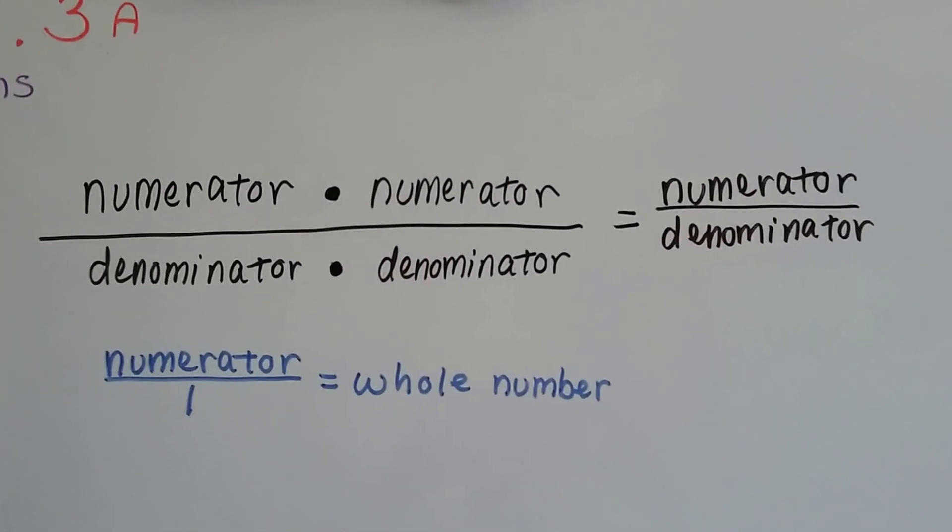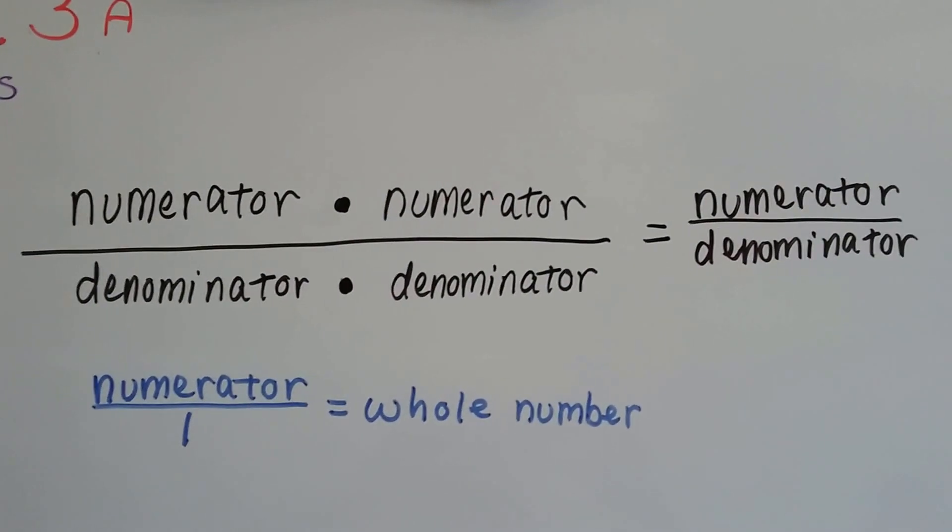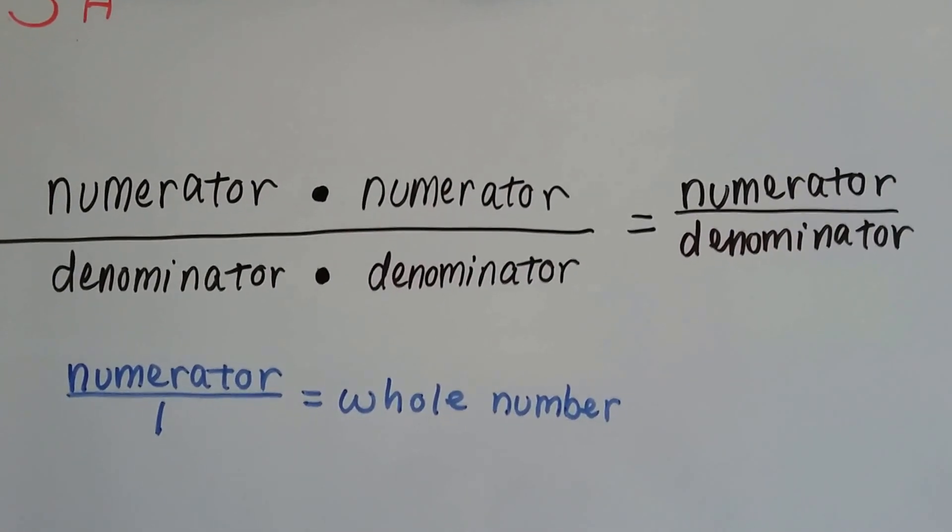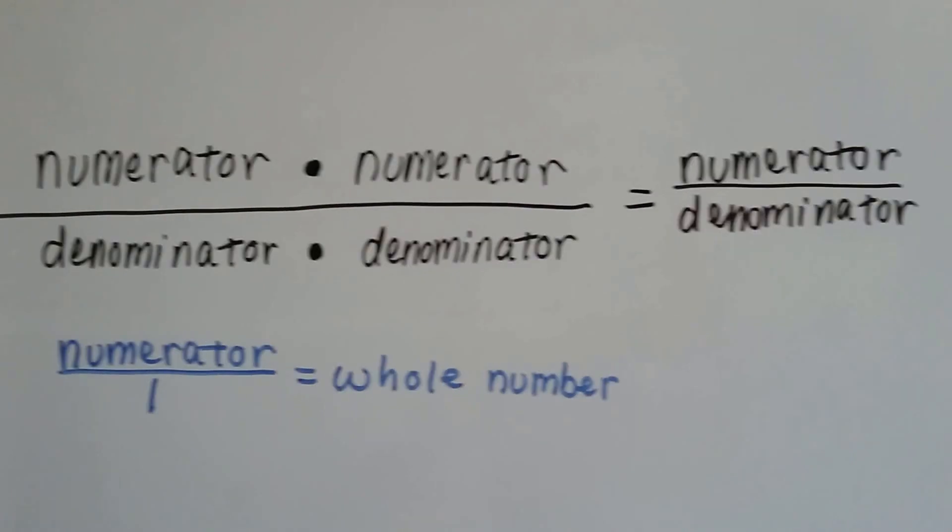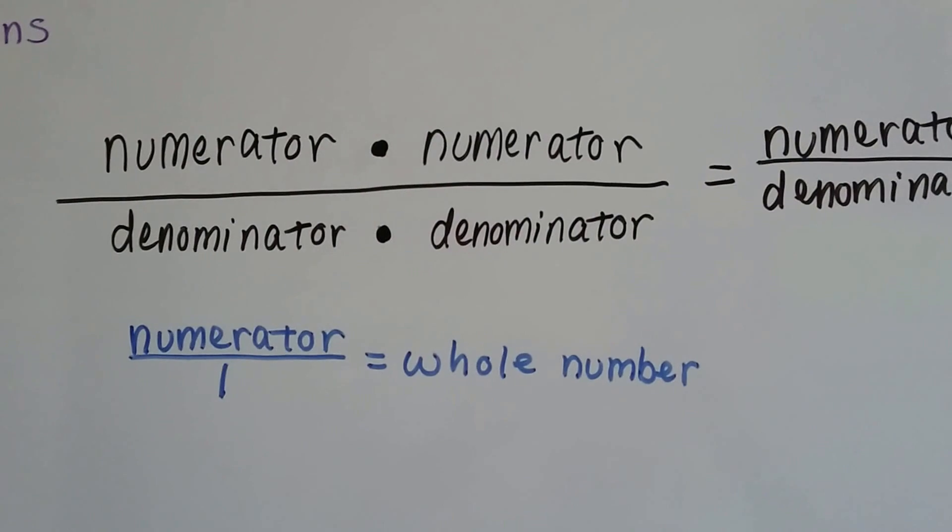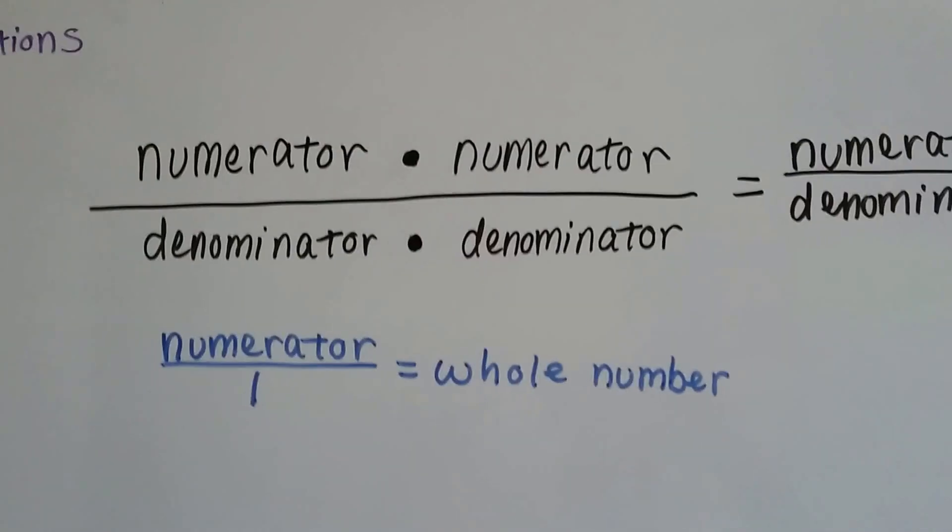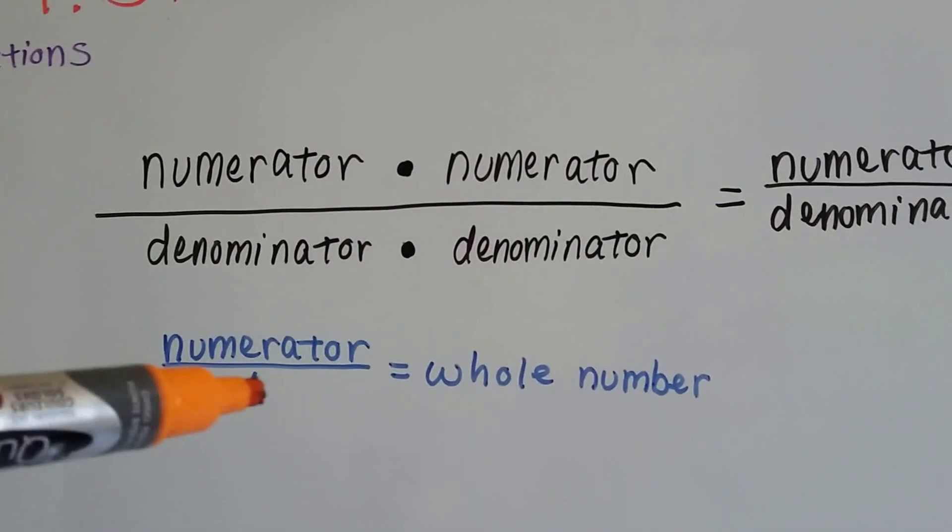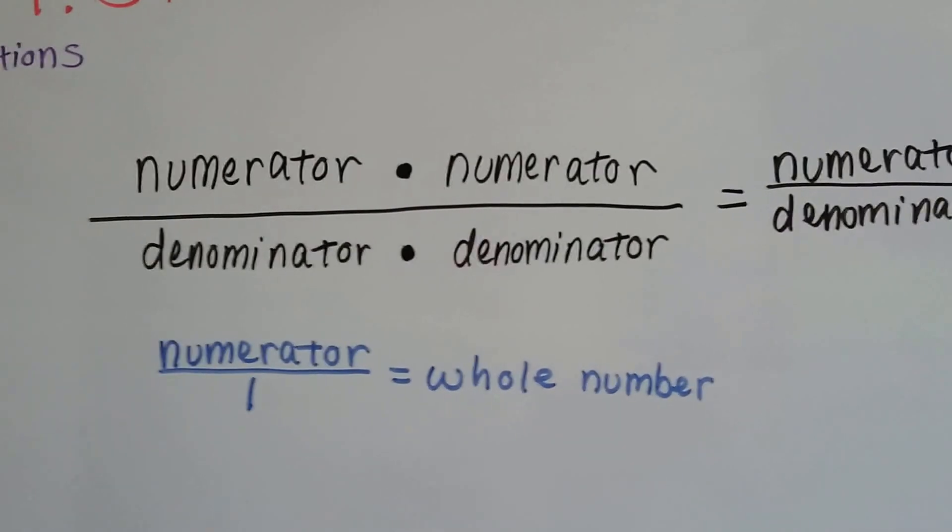When we multiply a fraction by a fraction, what we're doing is multiplying the numerator by the numerator and the denominator by the denominator and just coming straight across. And when we have a whole number, if we put the whole number over a one, it turns it into a fraction.